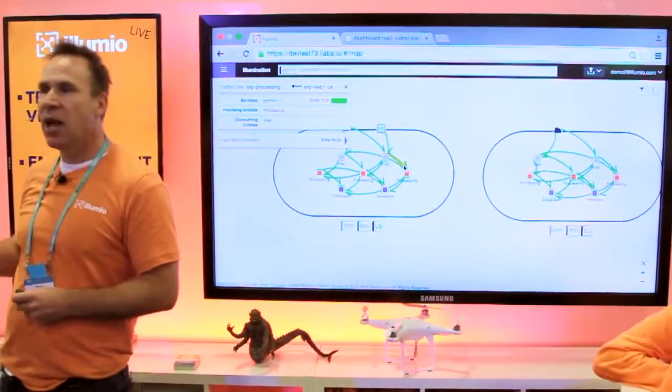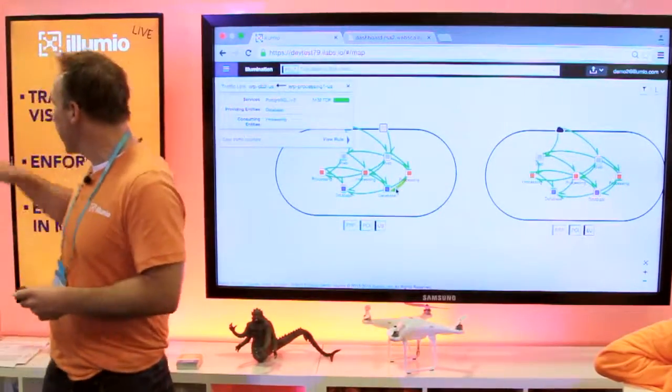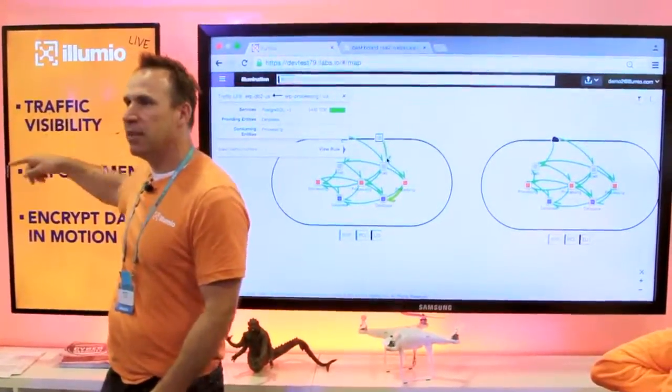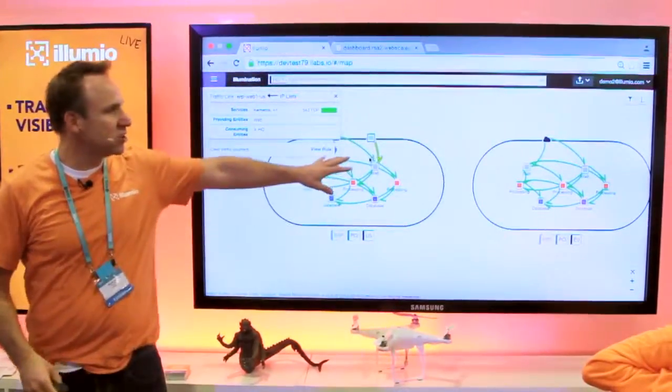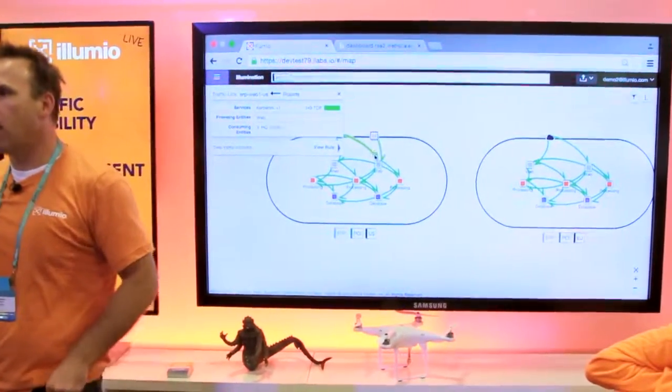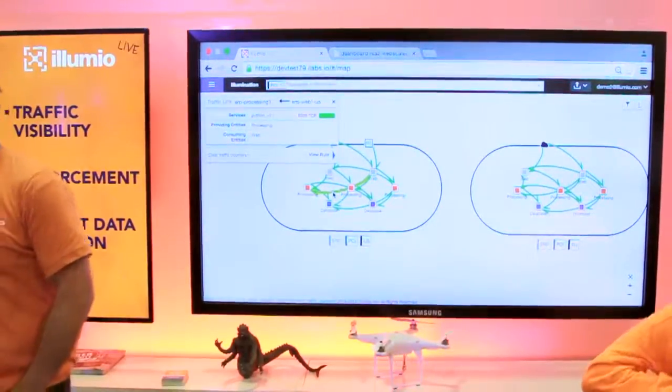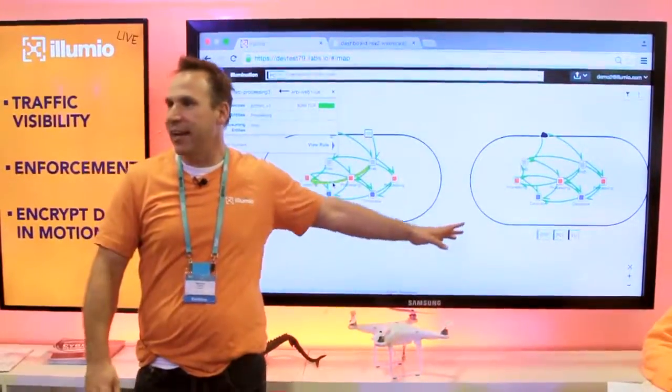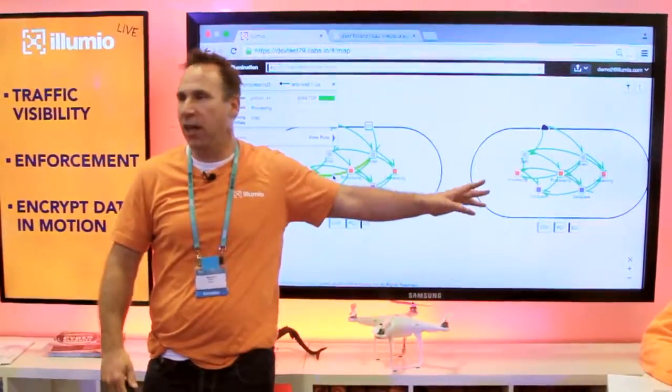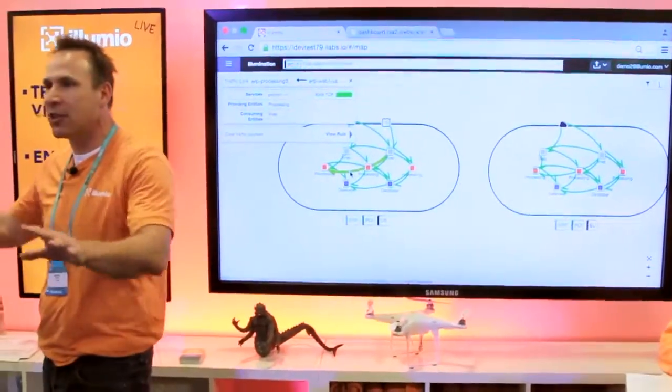First thing is you have to be able to visualize the PCI environment. Anoop has just pulled up two credit card processing applications. One of them is in Europe. One of them is in North America. The first thing you'll notice is we're isolated. The European version from the U.S. did it and we did it without the network. There's no reliance on the network.